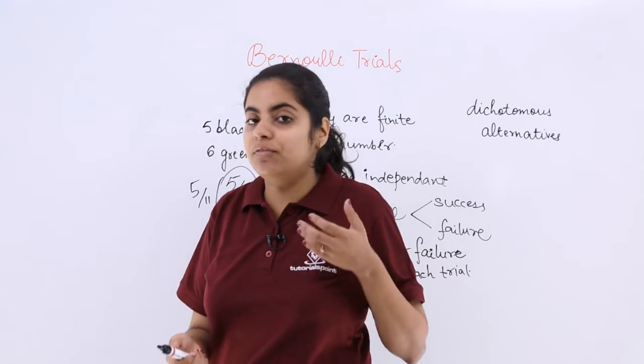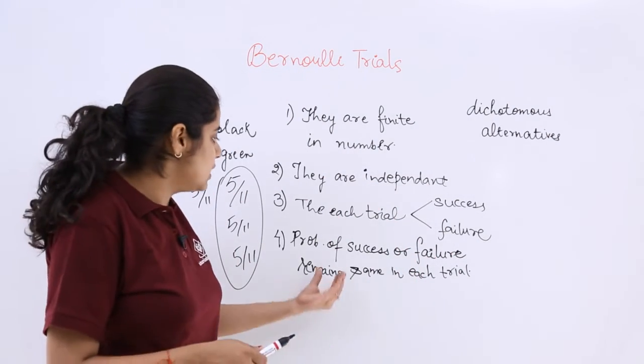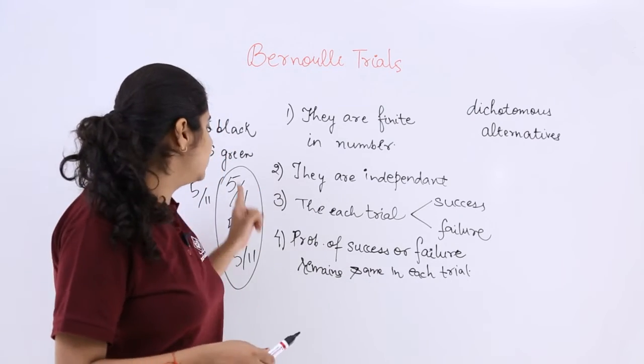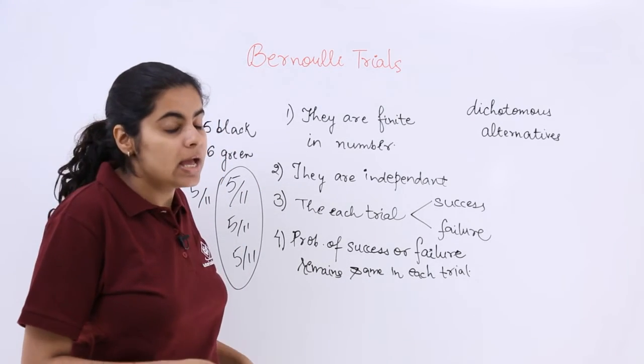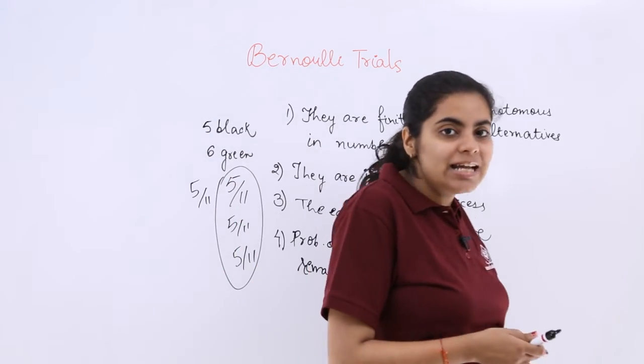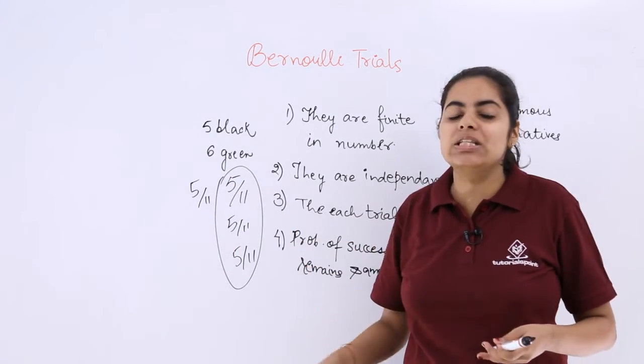So that means in the first case when it was with replacement, the probability of success or failure would remain the same because the probability is coming out to be the same.